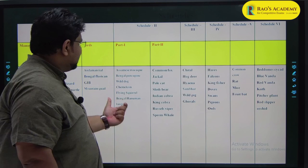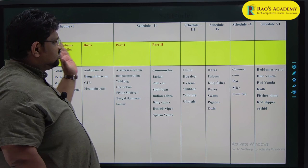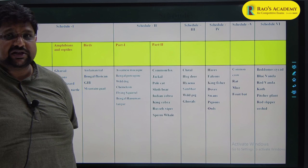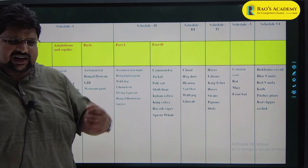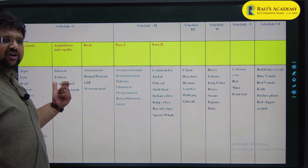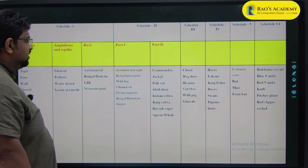Schedules 2, 3, and 4 contain other animals with decreasing levels of protection and penalty. If you kill an animal listed in Schedule 1, you attract major penalties, fines, and imprisonment. Schedule 5 contains vermins - animals that can be killed without penalty. Animals from Schedules 3, 4, or 2 can be shifted to Schedule 5 in specific geographical regions for specific time periods. Dugong is clearly listed in Schedule 1.